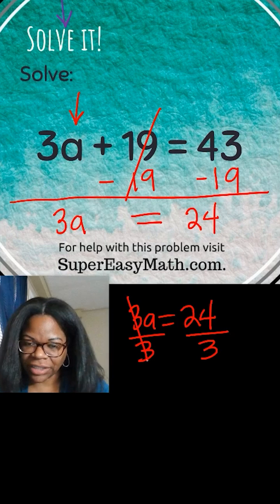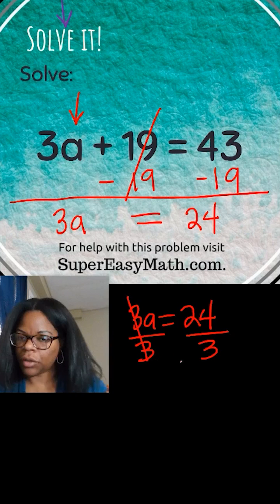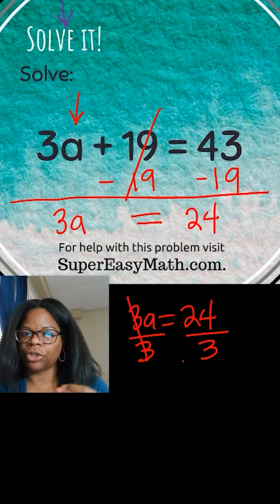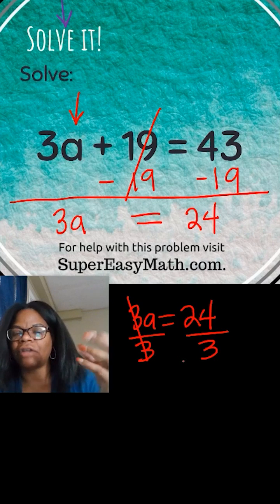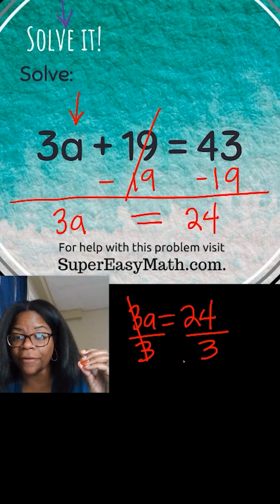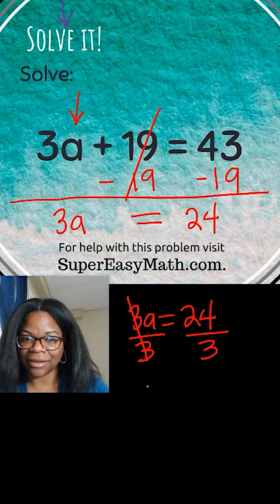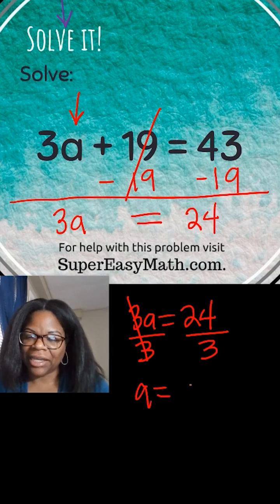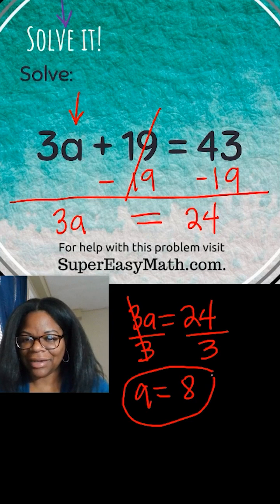Now the 3s cancel out. When you do the inverse operation, it gets rid of the number part and the rest is still left. So over here we still have the a, and that equals whatever 24 divided by 3 is — and that's 8. So a equals 8.